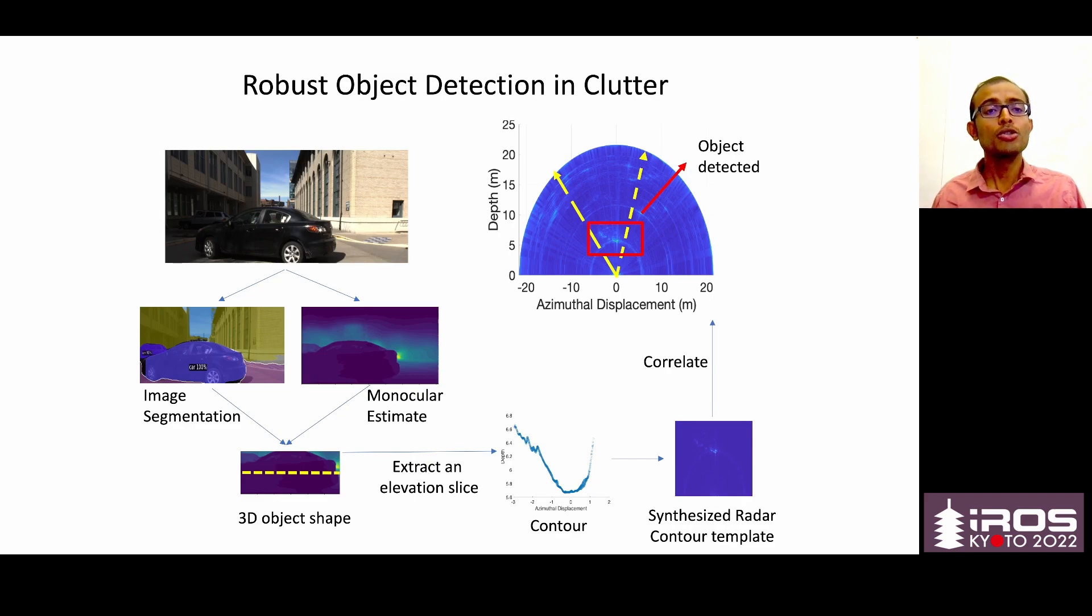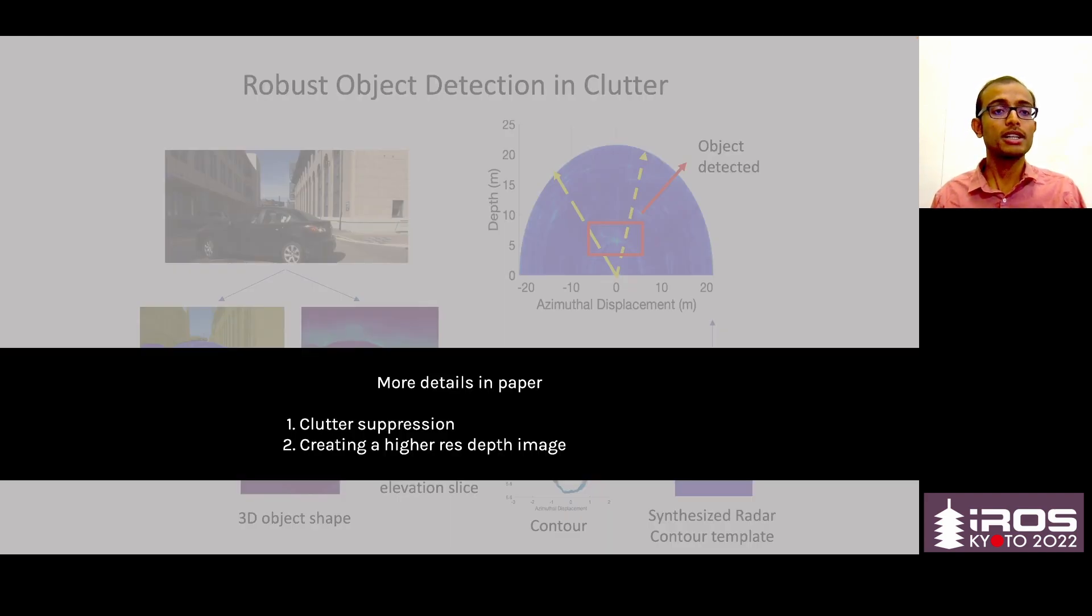We also do a couple of other things in the paper which makes use of camera information to suppress clutter before we do the object detection, and we also make use of camera information to create a higher resolution depth image than the one which we already have at the end of detection.